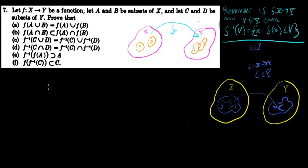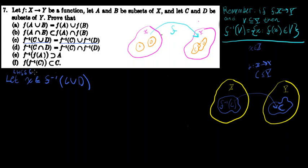Like always, we're going to prove that the left-hand side set is a subset of the right-hand side set, and vice versa — we're going to prove that the right-hand side set is a subset of the left-hand side set. So we're going to take any general element: let x be in the inverse image of C union D under F. We want to show that any x with this property must be in the right-hand side set, which shows that all x in this left-hand side set must also be in the right-hand side set.